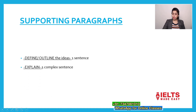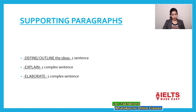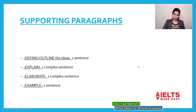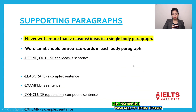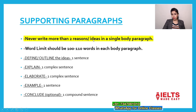In the second sentence, explain the first reason or first idea with the help of one complex sentence. Explain the second idea with the help of another complex sentence. Then in the next sentence you need to mention an example — an example should always be related to the reasons mentioned in the topic sentence. At last you can conclude, but it is optional. Never write more than two reasons or ideas in a single body paragraph, as you will not be able to explain more than two reasons properly. Word limit should be between 100 to 110 words in each body paragraph.